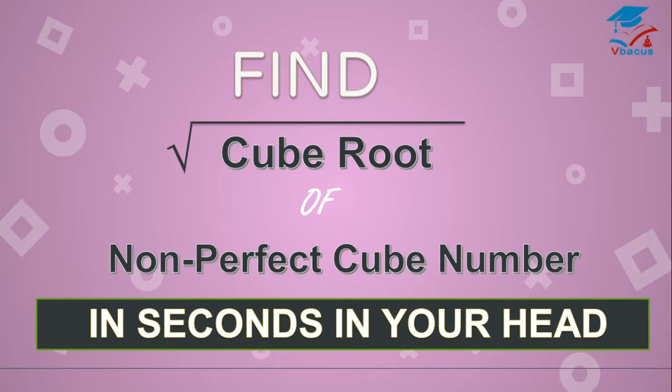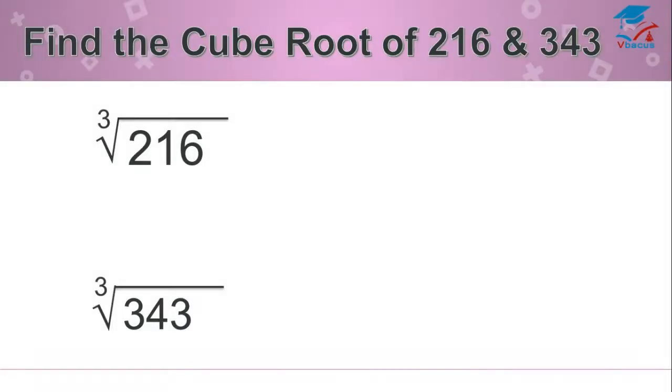Let us start the amazing trick without wasting any more time. Find out the cube root of 216 and 343. Since 216 is a perfect cube number, so its cube root is 6. 343 is also perfect cube number, so its cube root is 7.